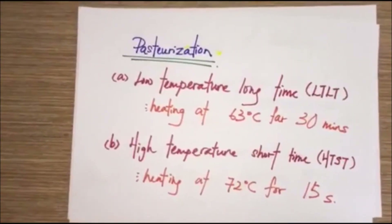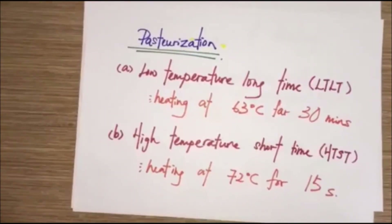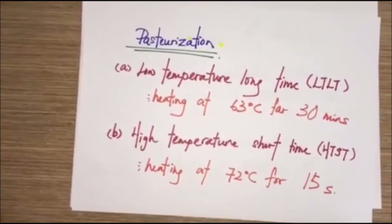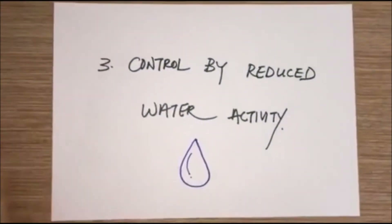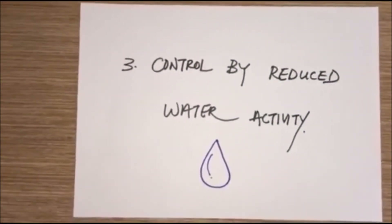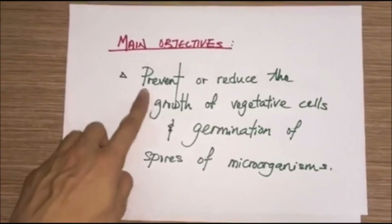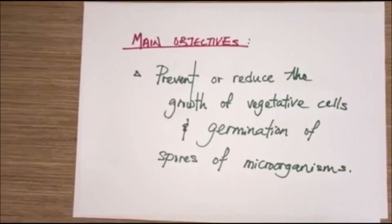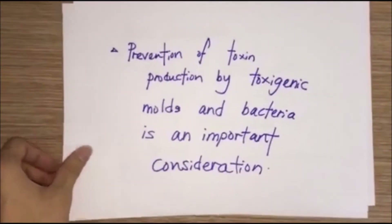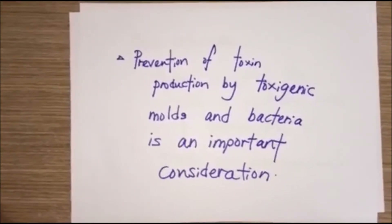Pasteurization includes low-temperature long-time (LTLT) heating at 63°C for 30 minutes, and high-temperature short-time (HTST) heating at 72°C for 15 seconds. Control by reduced water activity aims to prevent or reduce the growth of vegetative cells and germination of spores of microorganisms. Prevention of toxin production by toxigenic molds and bacteria is also an important consideration.